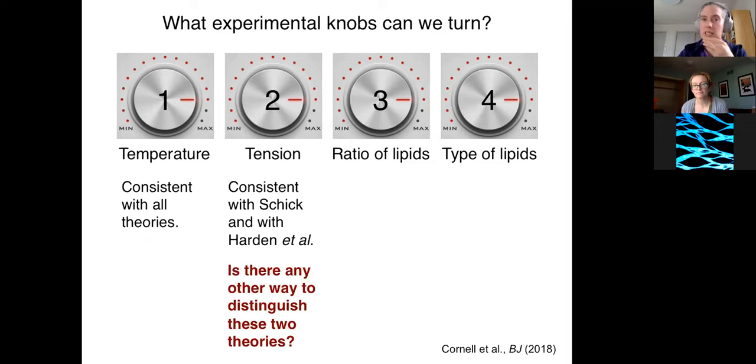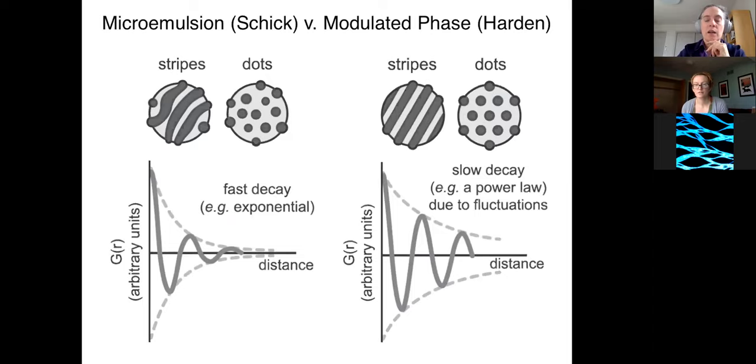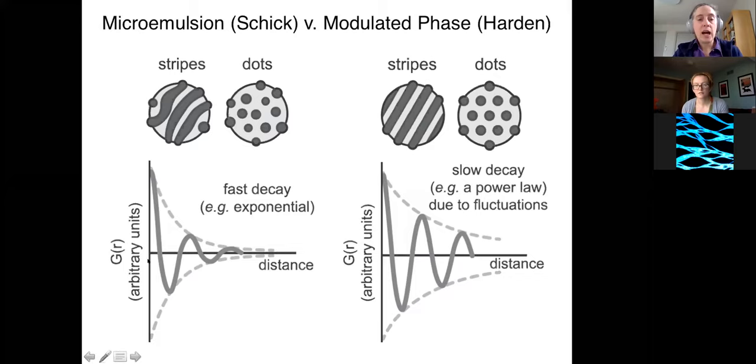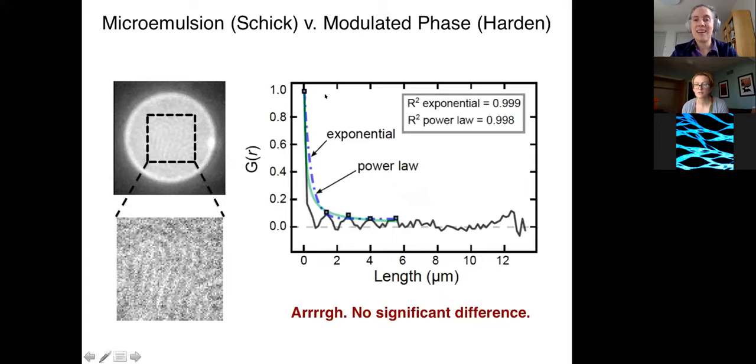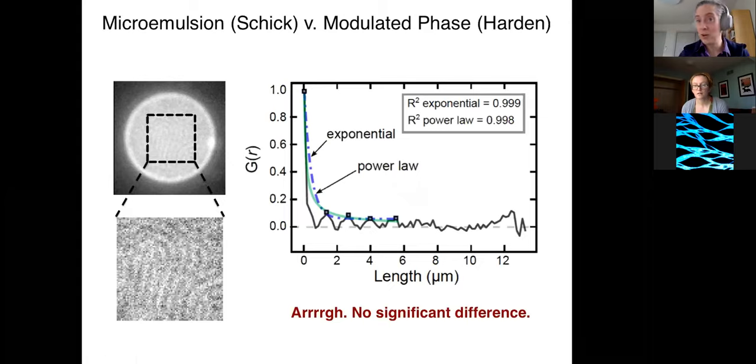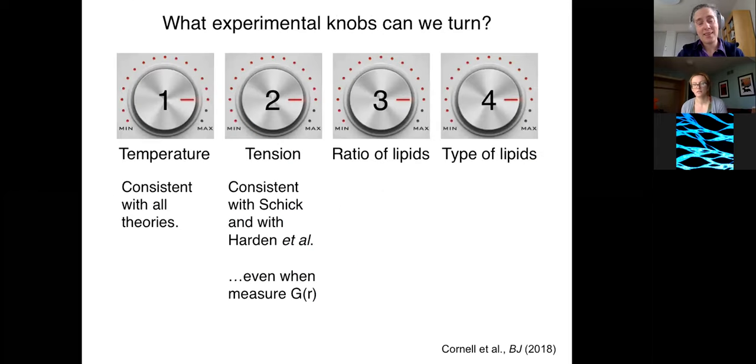Next, let's think if there's any other way to distinguish those two theories. Well, Michael Schick's theory is one of a microemulsion, and the other theory is one of a modulated phase. And those two different theories differ in terms of how fast there's a decay of that order. So on the x-axis here is distance, on the y-axis is a correlation, and the decay should be faster in one case than the other case. So let's look at our data. We get a bunch of stripes, and these stripes happen to be almost aligned in correlation of that. And we don't see any difference within experimental uncertainty between these two theories. So I can't say whether it's a microemulsion or a modulated phase. Okay. So far it's consistent with everything that addresses it.